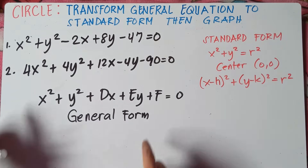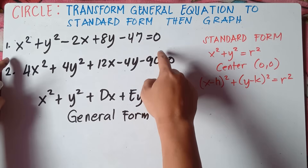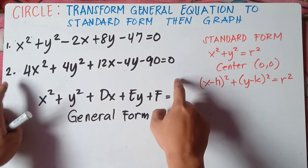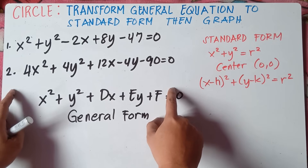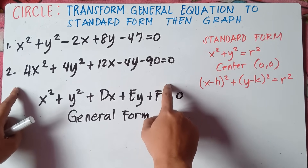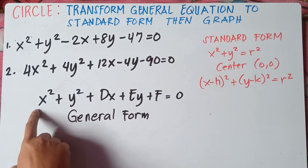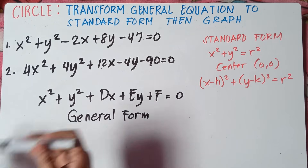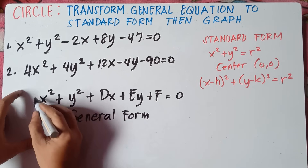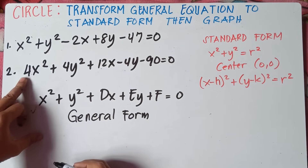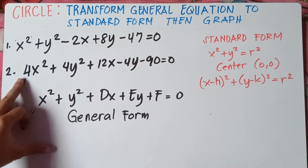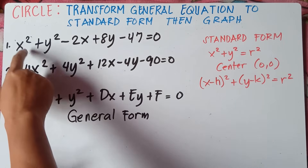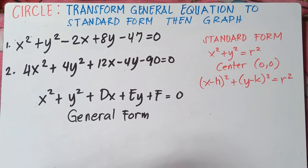Alright, let's start. By the way, we will answer number 1 in this video. For our second video, we will be answering number 2. I will put the link in the description below on how to answer when the numerical coefficient of x squared is greater than 1. Understood there is 1 here — if this is greater than 1, then what shall we do? I will put the link in the description below for number 2. Let's focus first on number 1.